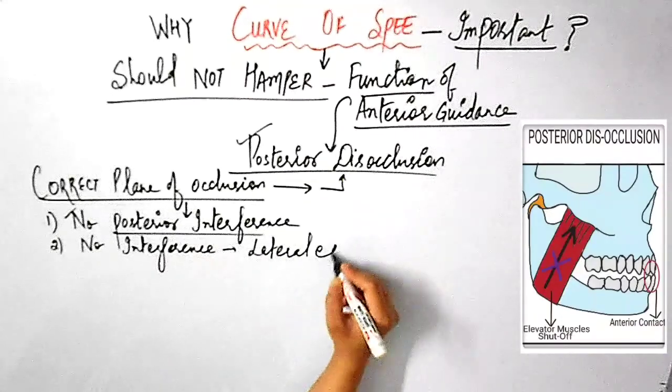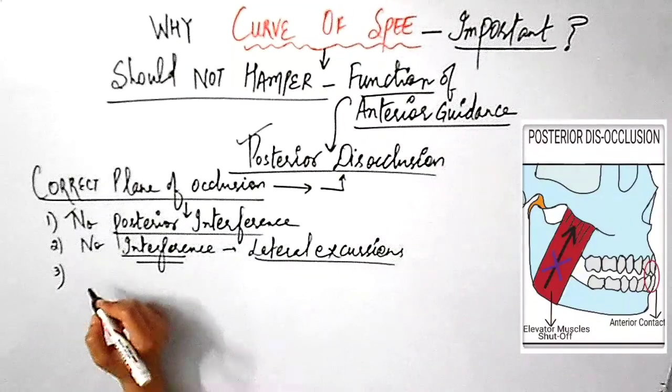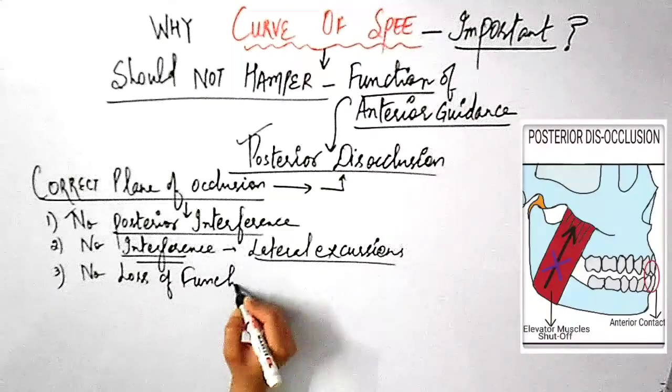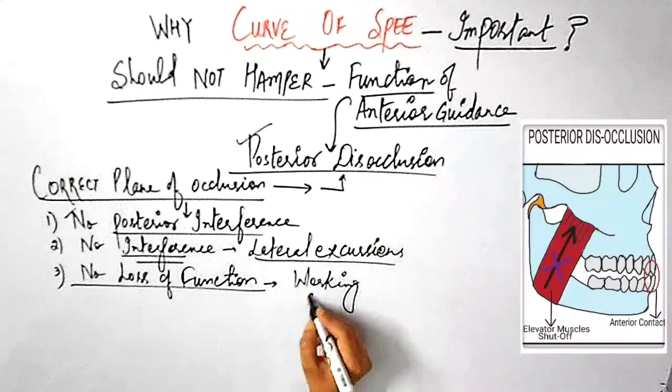That means there should be no posterior interference. There should be no interferences during lateral excursive movements and there should be no loss of function on the working side. Working side is the side towards which mandible is moved.